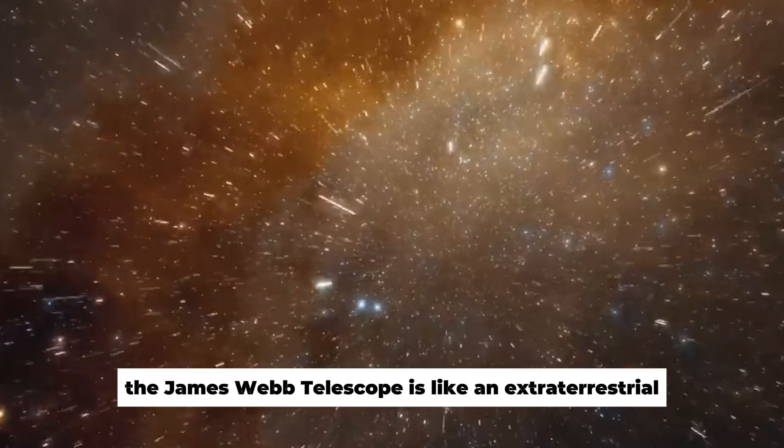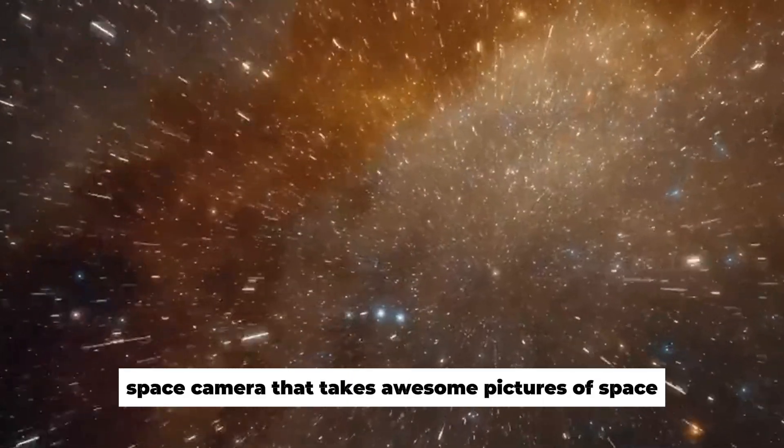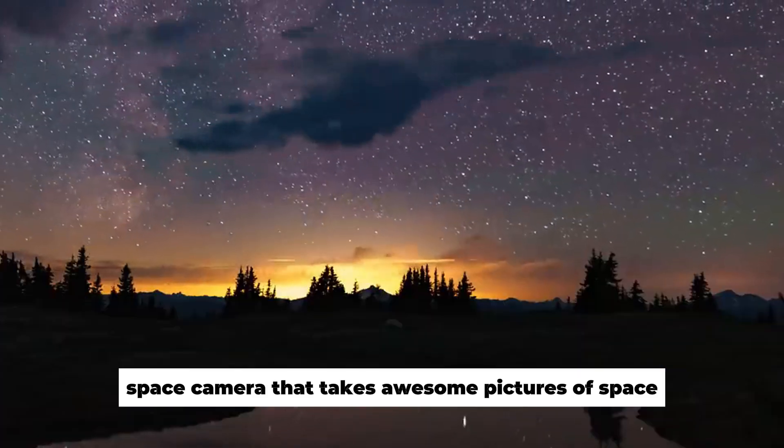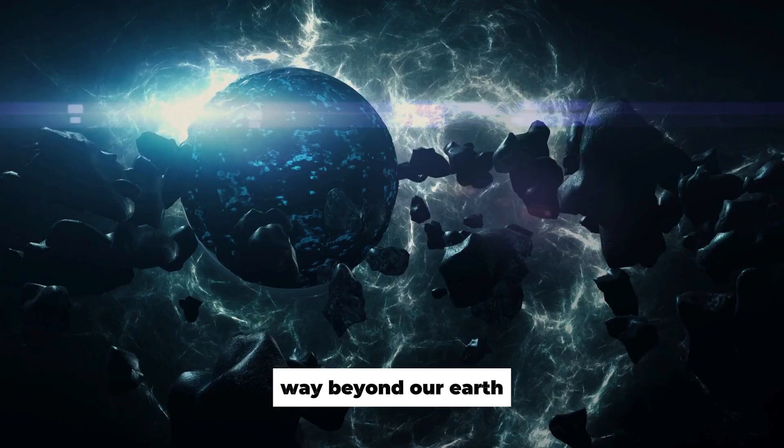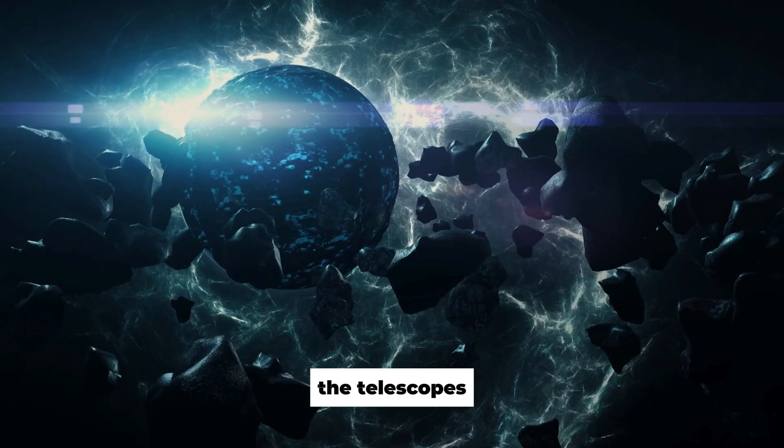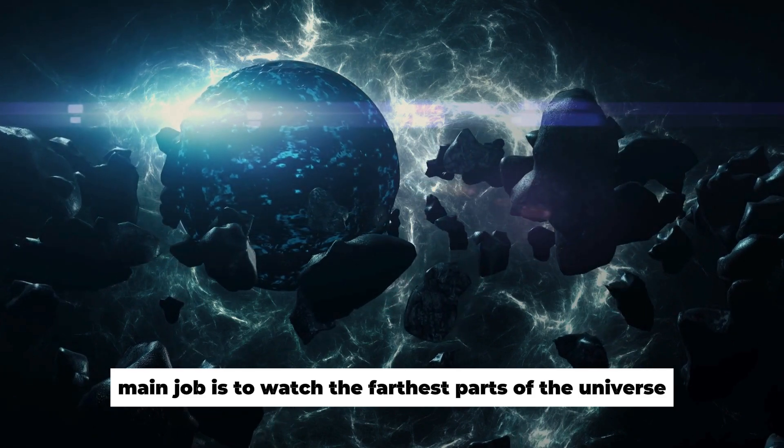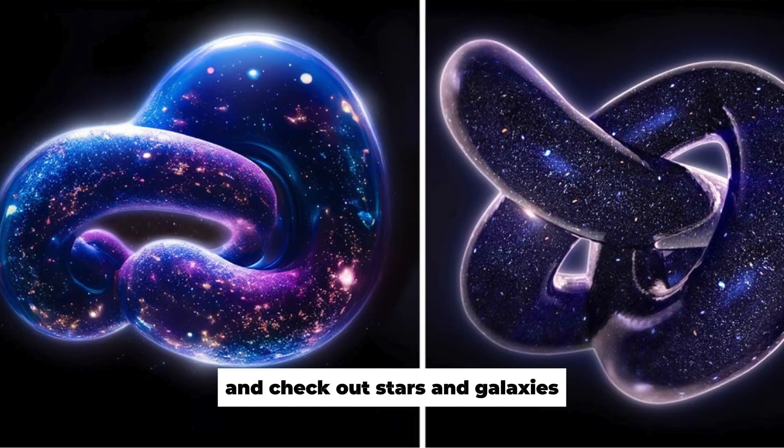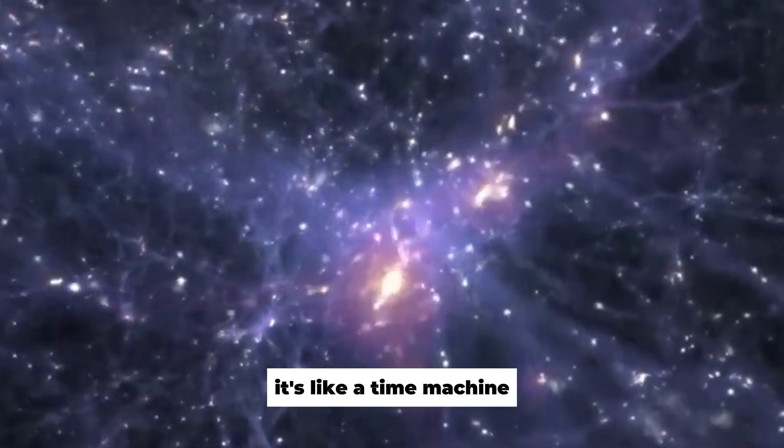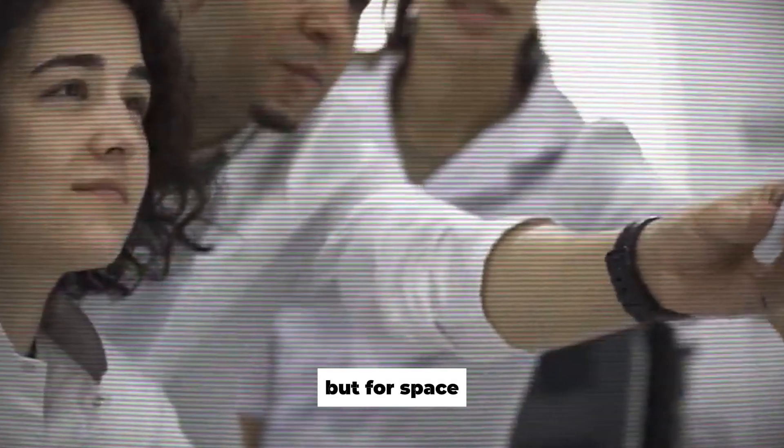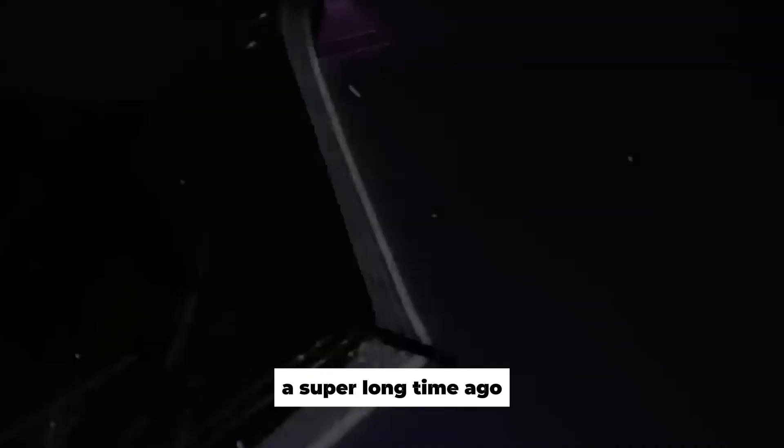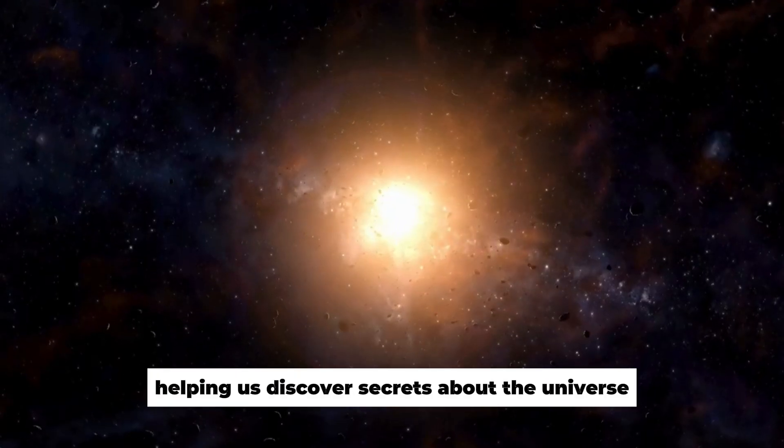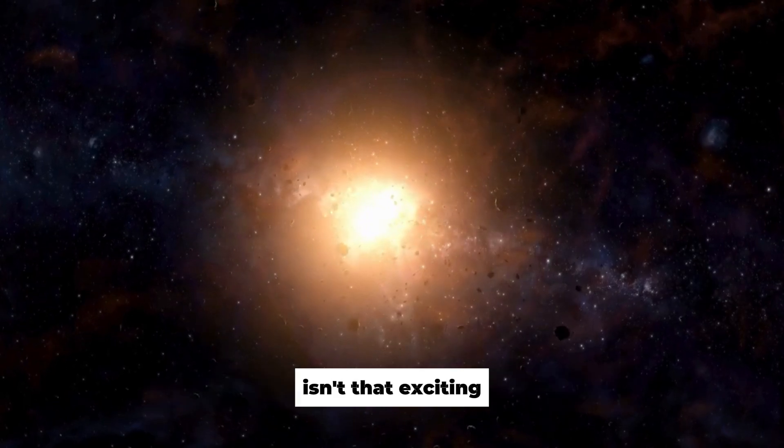The James Webb Telescope is like an extraterrestrial space camera that takes awesome pictures of space. It helps us look really far away into the universe, way beyond our Earth. The telescope's main job is to watch the farthest parts of the universe and check out stars and galaxies that started right after the Big Bang. It's like a time machine, but for space. So when we look at the pictures it takes, we can learn about how everything in space began a super long time ago. It's like a giant space explorer helping us discover secrets about the universe.